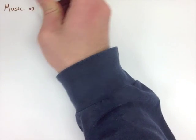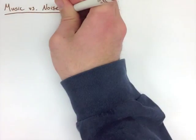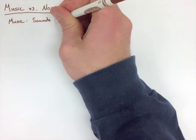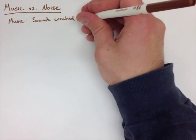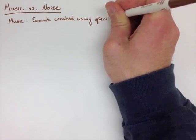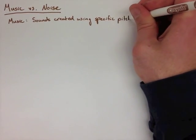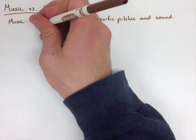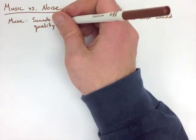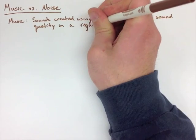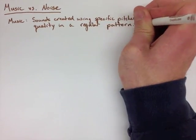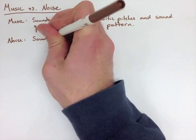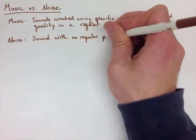When we're looking at music vs. noise, we're looking at two things that are kind of the same, but kind of different. Music is sounds created using specific pitches and sound quality in a regular pattern — this is why it sounds nice. Noise, on the other hand, is sound with no pattern or pitch; just random things that are happening.